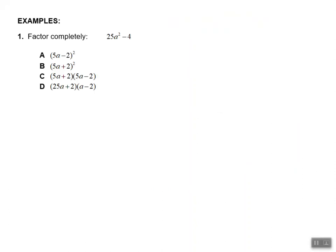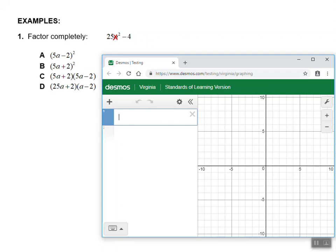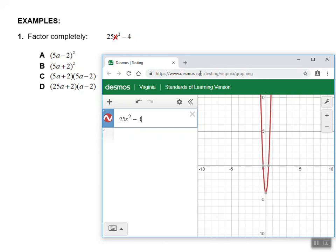Let's look at our first example. Number 1 says to factor completely 25a squared minus 4. If you already recognize this is a difference of two perfect squares, you can probably already see the answer. But if you're not sure, or if you want to double check, let's see what the Desmos calculator can do. Remember, we cannot plug in this expression as-is — we need to use the variable X. So I'm going to change that A to an X, and now let's pull up the Desmos calculator. We're going to type in 25X squared minus 4 and see what happens.